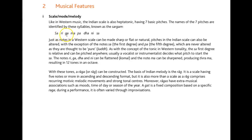So ri, ga, da, and ni — degrees 2, 3, 6, and 7 — can be flattened, and the note ma, the subdominant or fourth degree, can be sharpened to produce tivra ma, resulting in 12 tones in an octave. Take a pencil and write it out, and also do some research on how they show the flattened and sharpened notes. With these tones, a raga can be constructed.